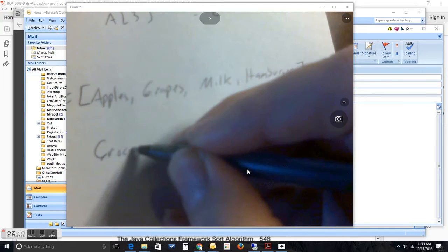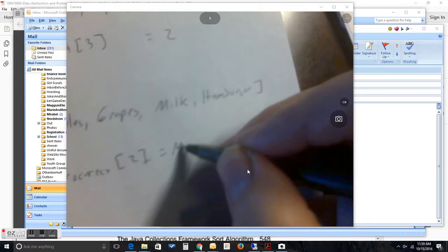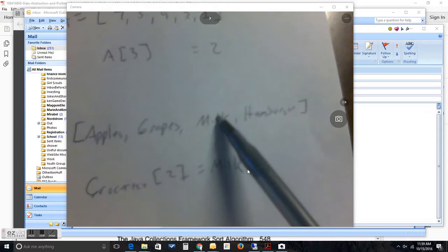And I can call that array apples, grapes, milk, and hamburger. And I could put this into a variable list of, say, groceries or something. Sorry, my writing is terrible. But, groceries. And then I could refer to, say, groceries of two happens to be milk.